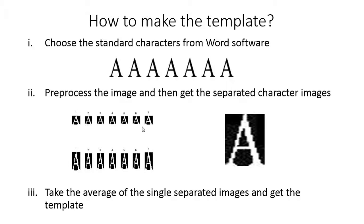How to make the template? The first step is to choose standard characters from a software. Then do the pre-process on the image, and get the separated character images — these are the segmentation images. Then take the average of the single separate images to get a template.